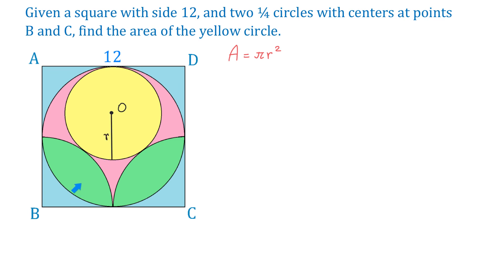The two quarter circles each have a radius of 6 units, because that is half of 12. Let this midpoint be point E. Then we can say that BE equals 6 and CE is also 6.